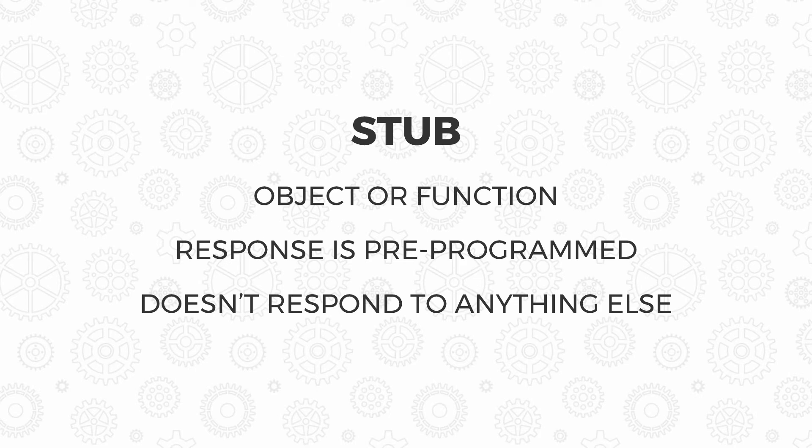We then have what's called a stub. A stub is an object or function where you pre-program the response — you tell it what to respond to given some arguments, and generally it doesn't respond to anything else. You tell it specifically in your test what you want it to respond with. This helps you test your happy paths or unhappy paths by returning different data from the stubbed functions.